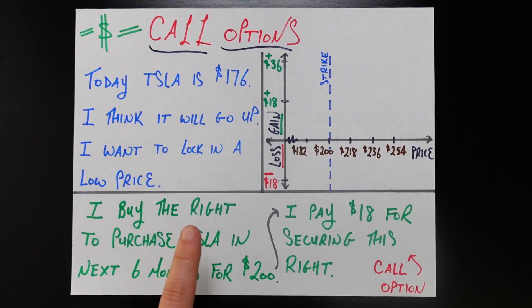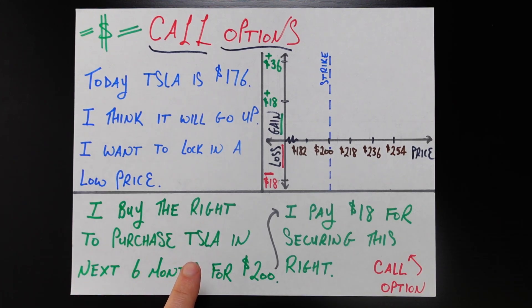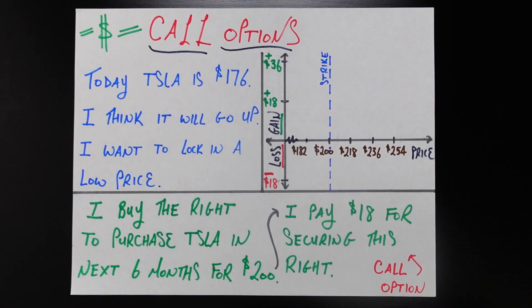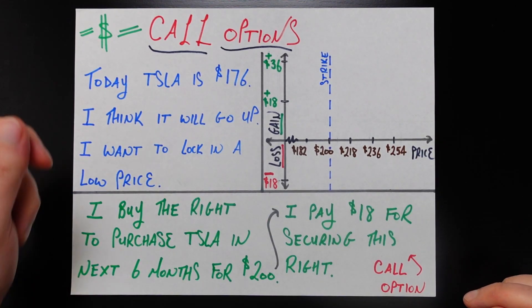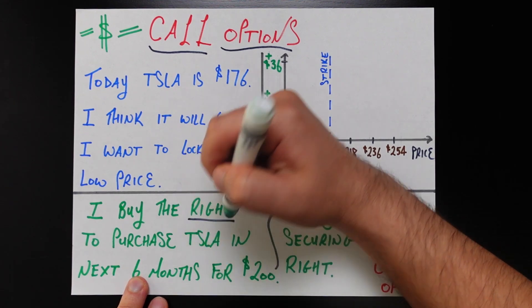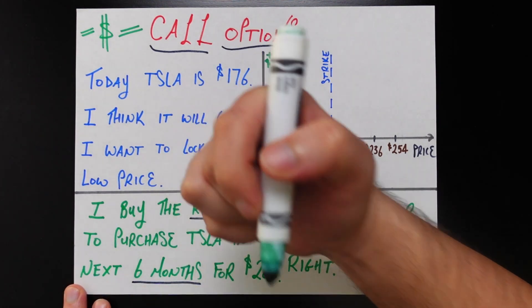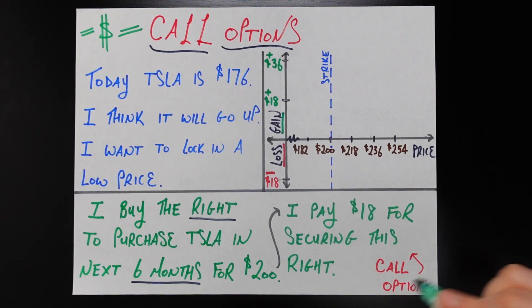I'm going to buy the right but not the obligation — and this part is very important — the right but not the obligation to purchase Tesla stock in the next six months for $200. There is kind of a lot going on here, so let's unpack the key components. A call option is a contract which says I am right now buying the right, the option, to buy Tesla stock within the next six months, and the price at which I'm going to be able to buy that Tesla stock is going to be $200.